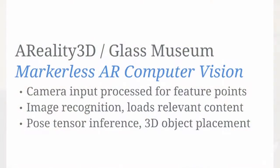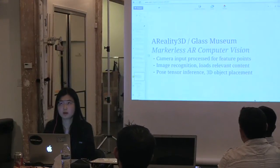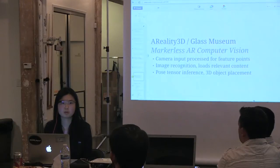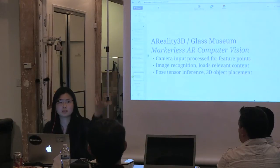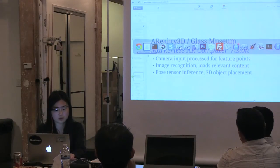The coolest part: there's a camera on Glass so you can do computer vision and augmented reality. Markerless AR computer vision quickly processes camera input for feature points, and you can do two things: image recognition — for example, identifying a painting and loading metadata — or you can extract pose tensor inference and do 3D object placement.